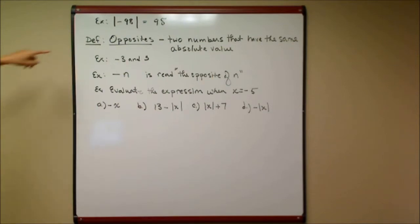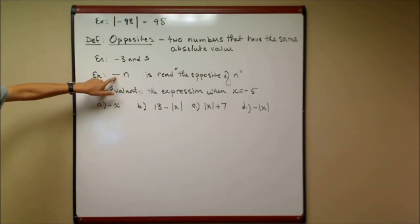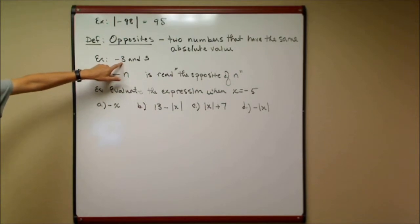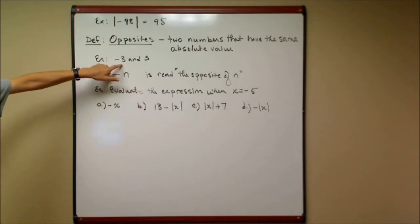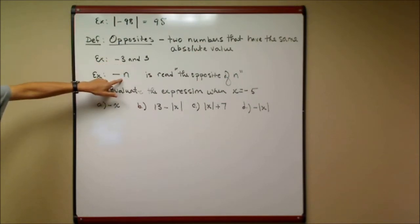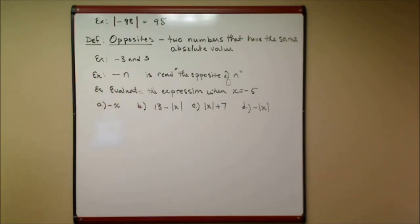When two numbers have the same absolute value — like three and negative three — we call them opposites. The notation negative n means the opposite of n. We don't call it 'negative n' because that implies it must be negative, but we don't know what n represents. If n is positive, the opposite of n would be negative. If n is negative, the opposite would be positive. So calling it 'the opposite of n' is more accurate.